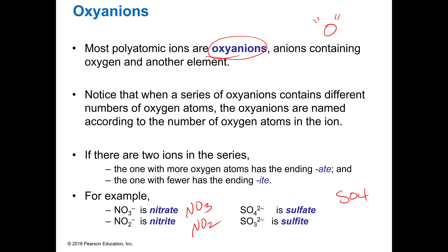If there are two ions in a series, the first one is going to end in ATE. So instead of IDE, if it's a polyatomic it's going to end in ATE. The one that has one fewer oxygen is going to end in ITE. There's no rhyme or reason to this — nitrate is NO₃, nitrite is NO₂, but sulfate is SO₄ and one less, sulfite, is SO₃.